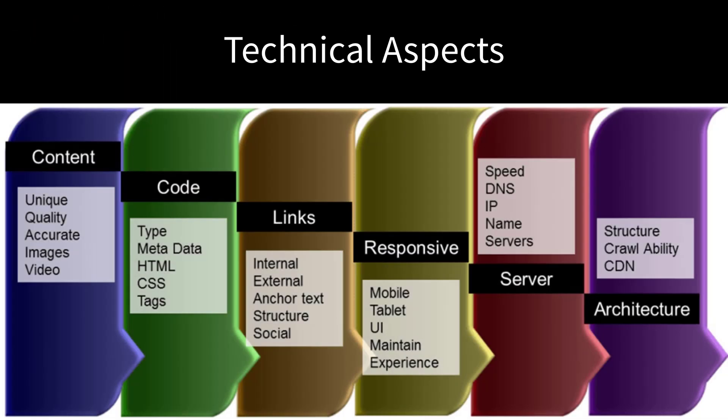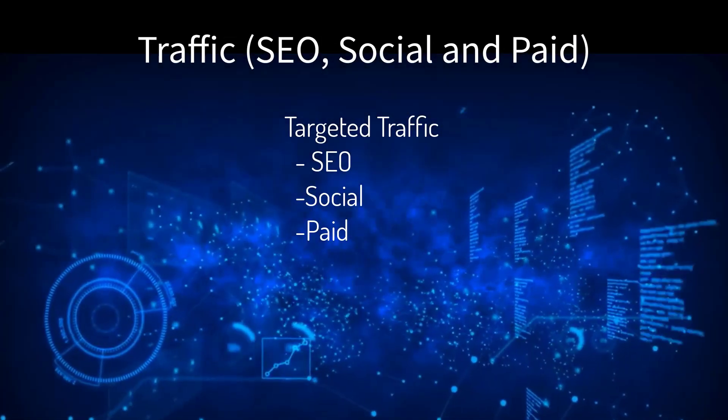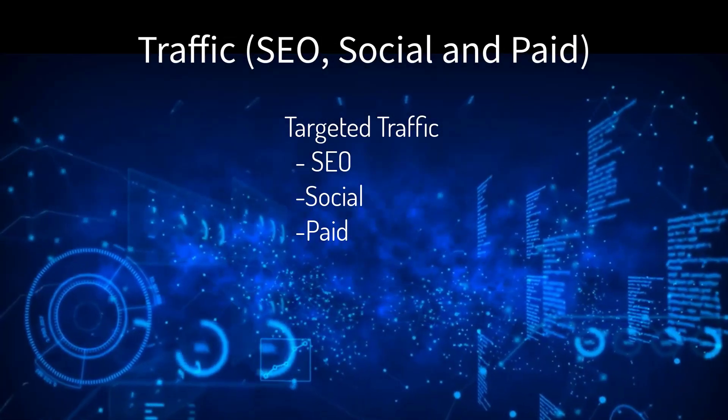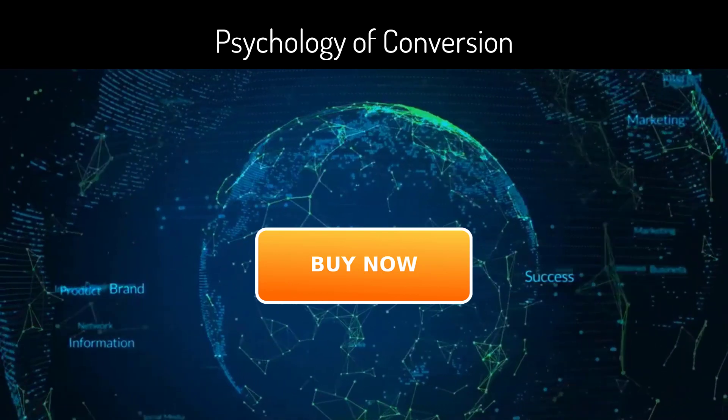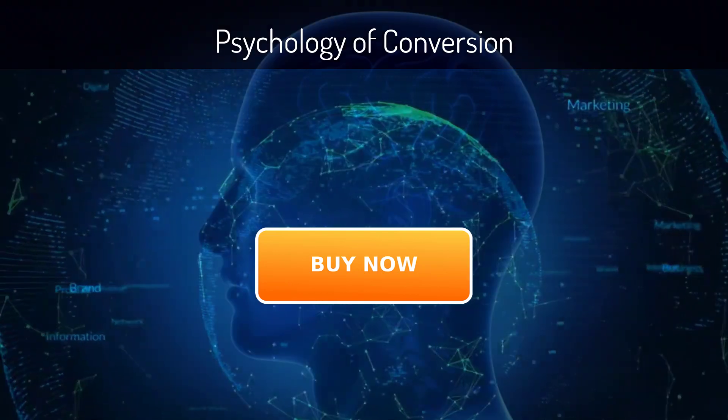Of course, all online marketing must have three elements in alignment: the technical aspects — servers, layout, code structure; the traffic — SEO, social, and paid; and the psychology of conversions.